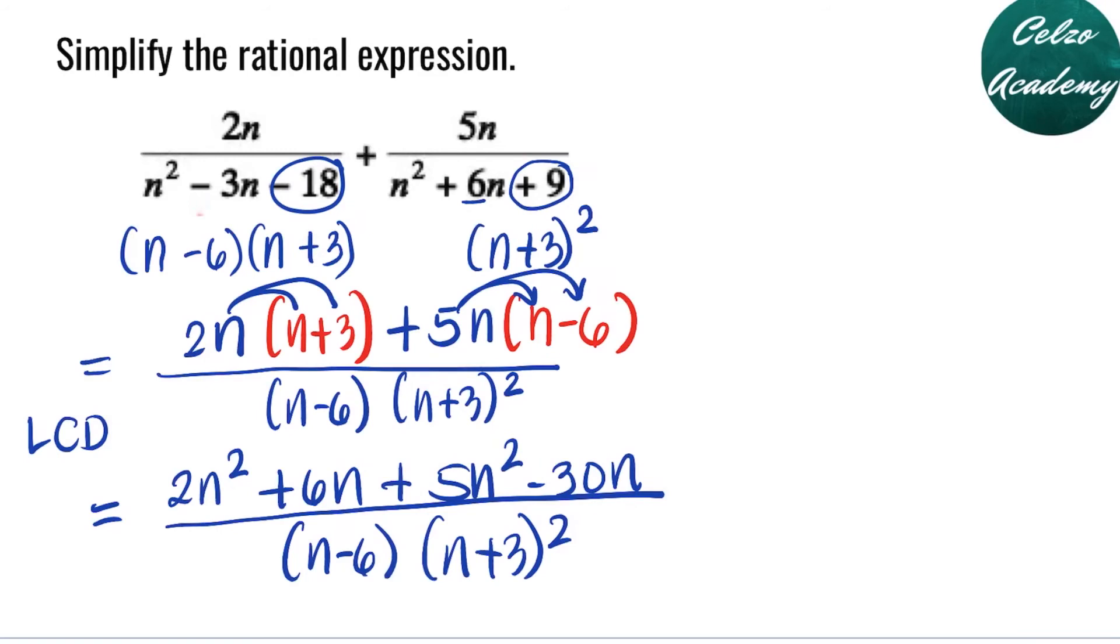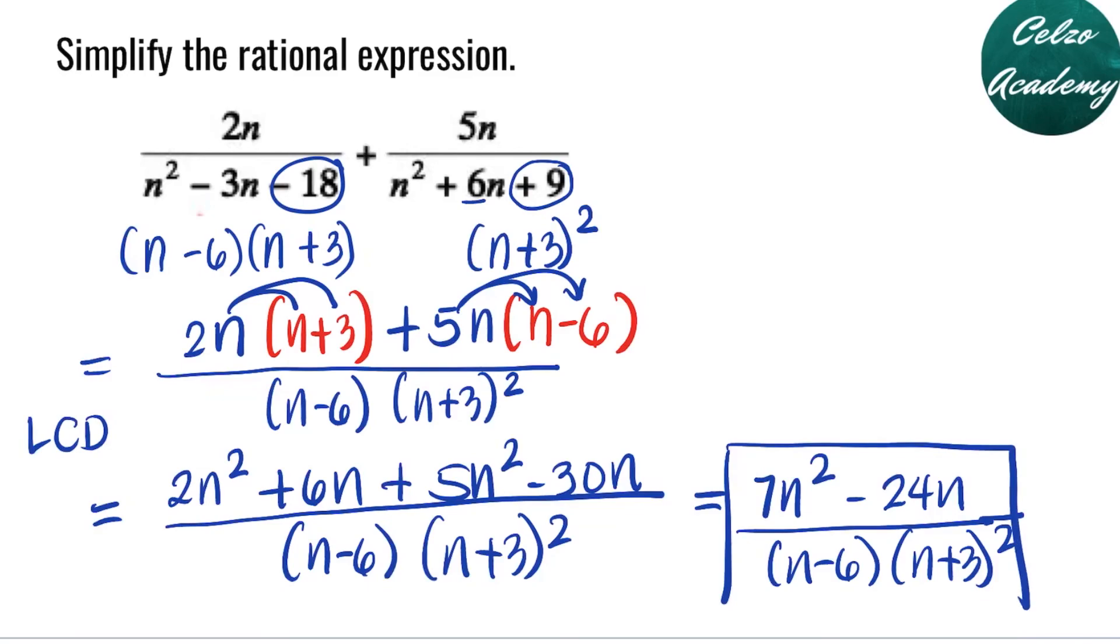Now, let's simplify the numerator. Combining 2n squared and 5n squared, that's 7n squared. 6n minus 30n is negative 24n. All over n minus 6 and n plus 3 to the second power. This is the simplest form of this rational expression.